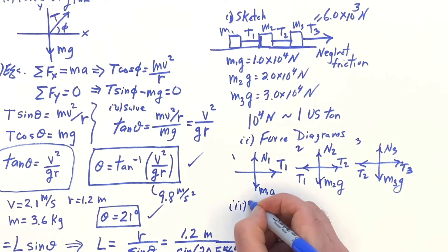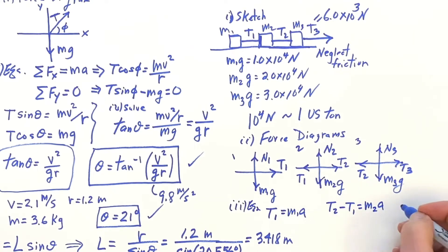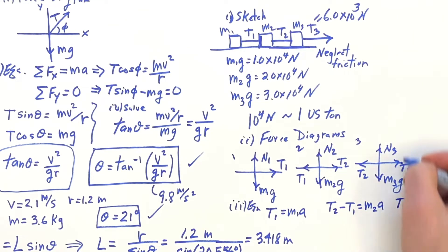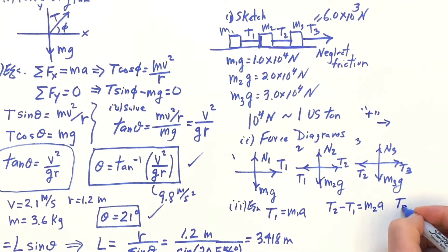So now we write down the equations. See, underneath here, we've got T1 equals M1A. We've got T2 minus T1 is M2A. Accelerations are all going to be going together. To the right is the plus direction.